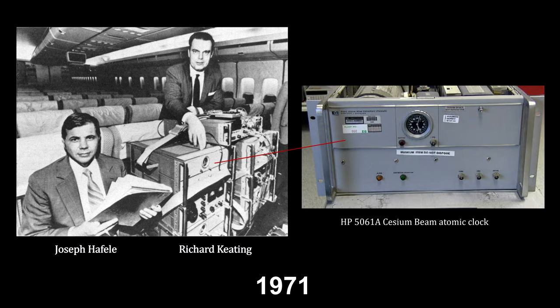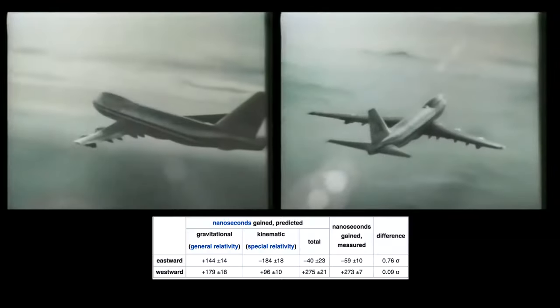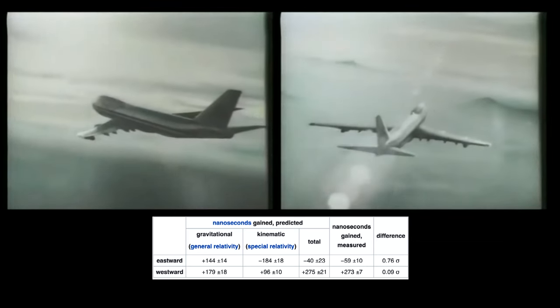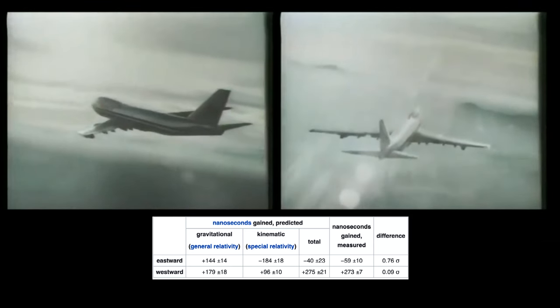In 1971, Joseph Hafele, a physicist, and Richard Keating, an astronomer, took four cesium atomic clocks aboard commercial airliners. They flew twice around the world, first eastward, then westward, and compared the clocks against others that remained at the United States Naval Observatory.